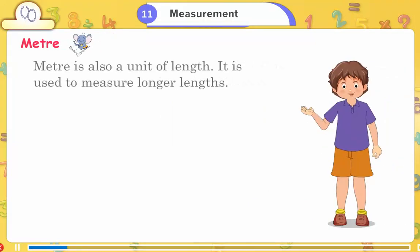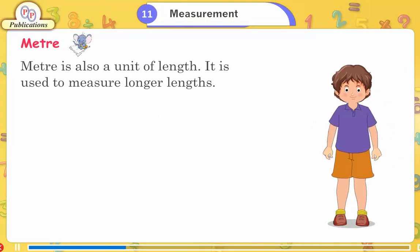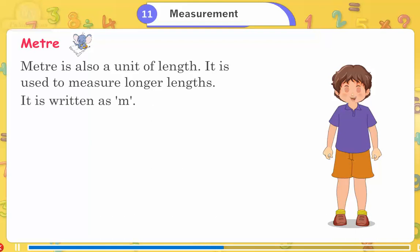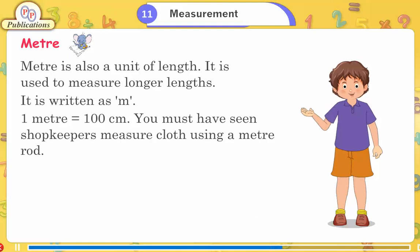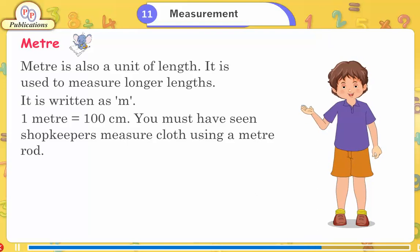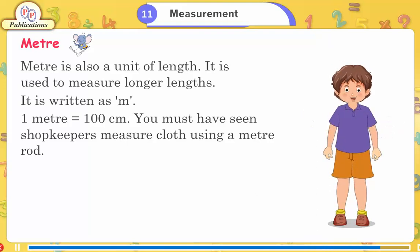Meter is also a unit of length. It is used to measure longer lengths and is written as m. One meter is equal to 100 centimeters. You must have seen shopkeepers measure cloth using a meter rod.